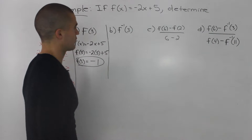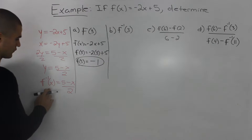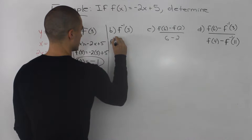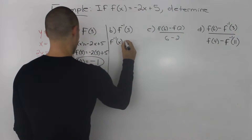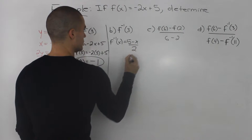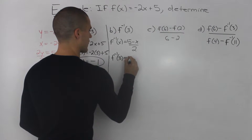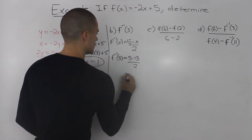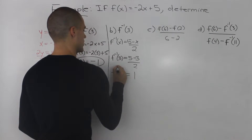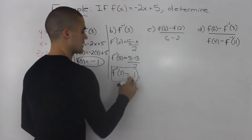Moving on to part b, we have to find f⁻¹(3). We use the inverse equation: (5 minus x) over 2. So for f⁻¹(3), we plug in 3 for x: 5 minus 3 is 2, over 2 gives us 1. So the answer to part b is 1.